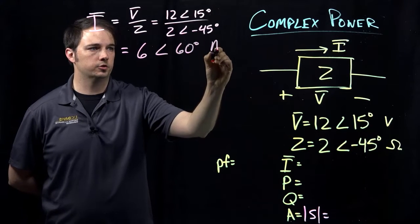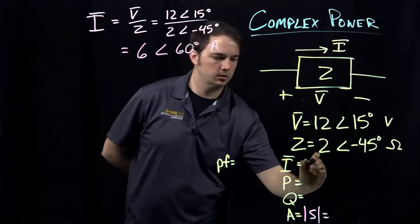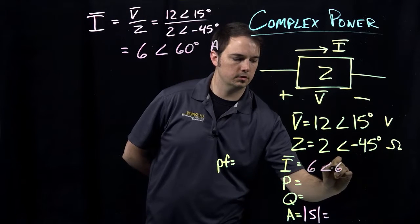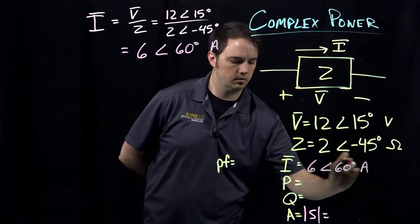So this just works out to give me 6 at an angle of 60 degrees, and this would be in terms of amperes. So 6 at an angle of 60 degrees.